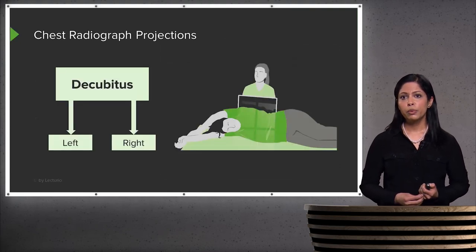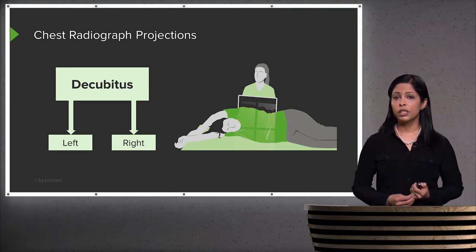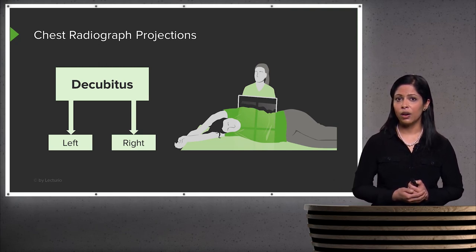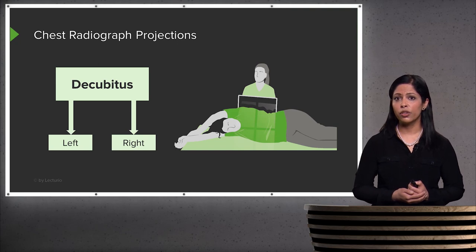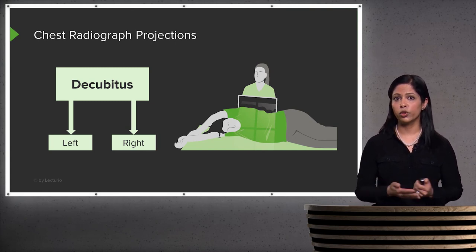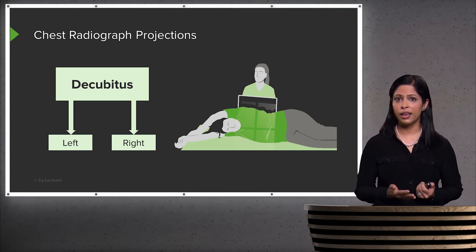Another type of position is the decubitus, which can be performed left or right. Left decubitus means the patient is lying on their left side down, and right decubitus means the patient is lying on their right side down. This is a very helpful projection in patients who can't undergo a lateral film, since both the standard PA and lateral are performed upright — if a patient can't sit or stand, we substitute the lateral for a decubitus.